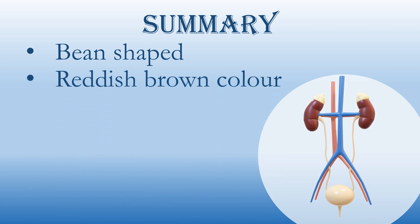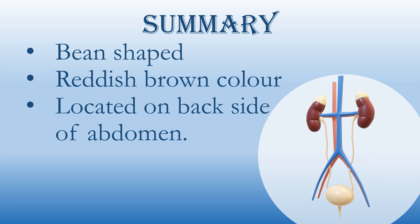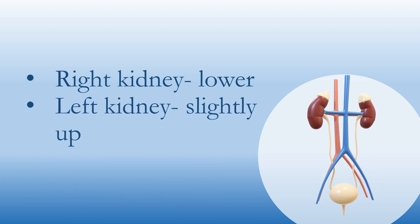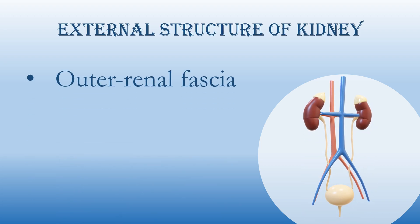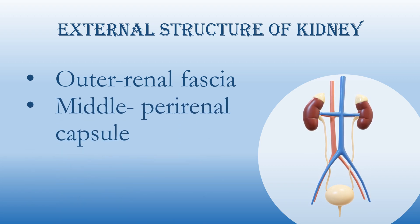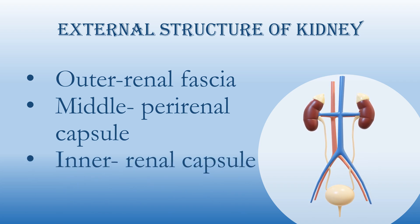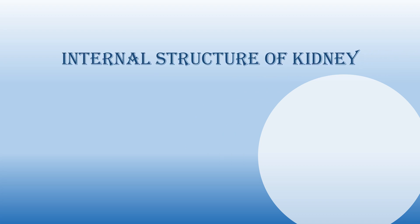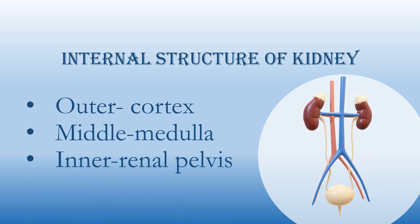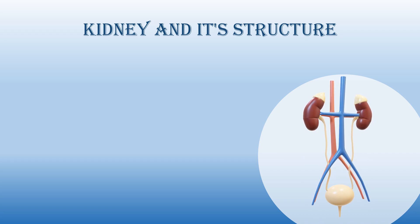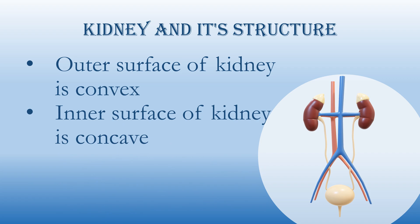Summary: Kidneys are bean-shaped, reddish-brown in color, and located on the back side of the abdomen. The right kidney is lower than the left kidney. Kidneys are divided into three external layers: outer renal fascia, middle perirenal capsule, and inner renal capsule. The internal structure consists of the outer cortex, middle medulla, and inner renal pelvis. The outer surface of the kidney is convex while the inner surface is concave.